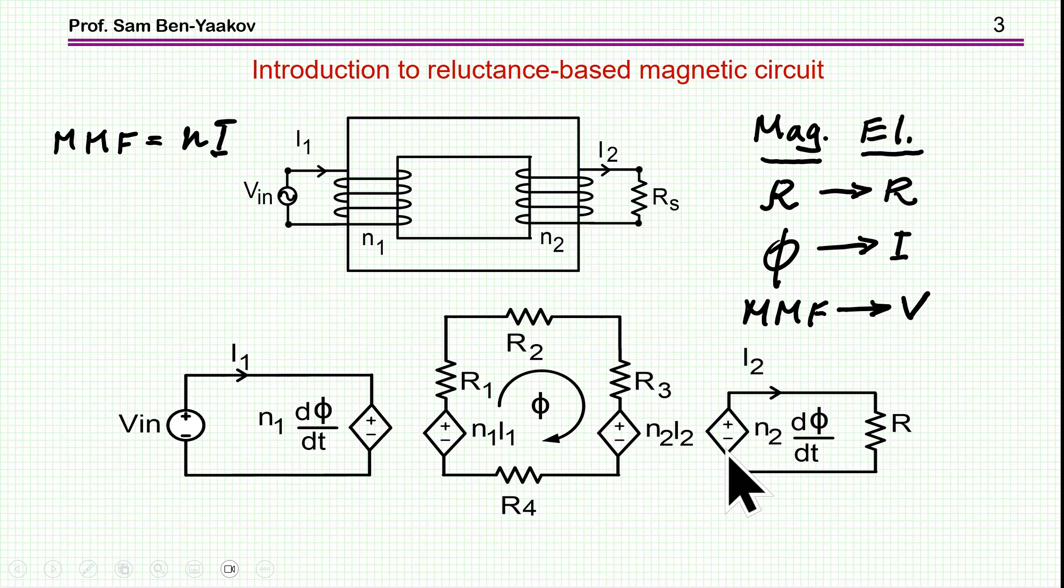This is the MMF coming from the current at the load and the current at the source, current here and current here. And then we have the interface, the electrical interface, in which we have a voltage source, which is actually Faraday's law, like here, in which we have NdPdT, which is the voltage reflected here to the input, by Faraday's law, as a function of the flux here, which is described as a current in this equivalent circuit.